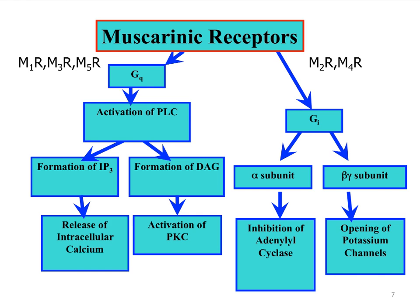The type of G-proteins really determines what's being linked to. If you have G-sub-Q, it's linked to phospholipase C and its products, including activation of protein kinase C, the release of intracellular calcium with biological effects, and the formation of inositol triphosphate and diacylglycerol. If you have subtypes that link to the inhibitory G-subunit, you get either inhibition of adenylate cyclase or opening of potassium channels.